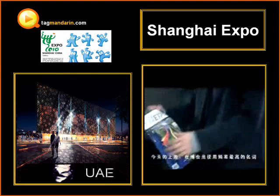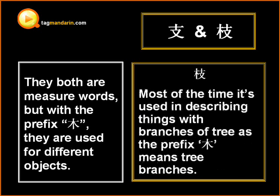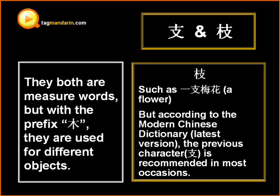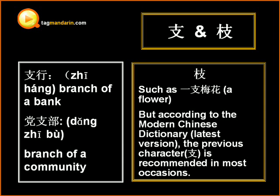Most of the time it's used in describing things with branches of a tree, as the prefix mu meaning tree refers to tree branches, such as yi zhi mei hua, a flower. But according to the modern Chinese dictionary, the character without the prefix is recommended in most occasions.